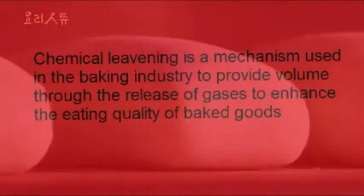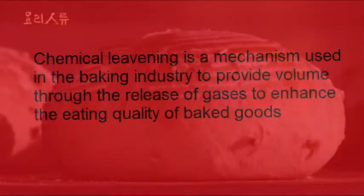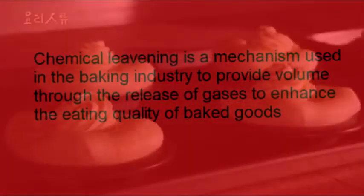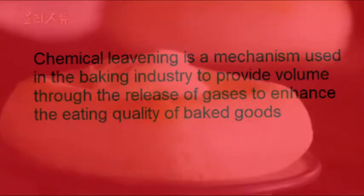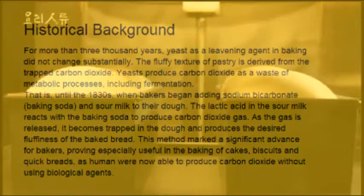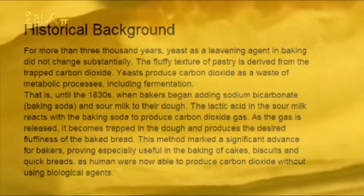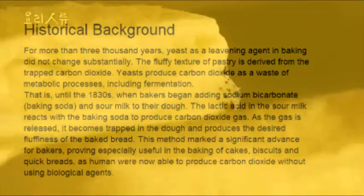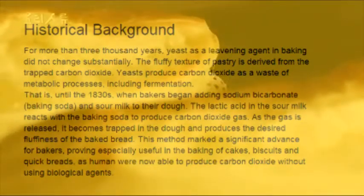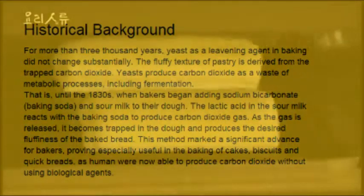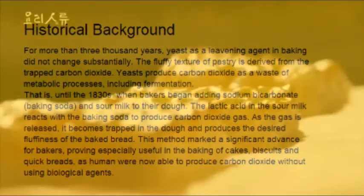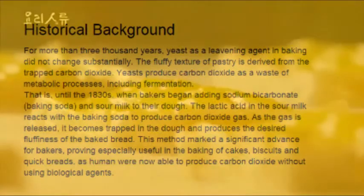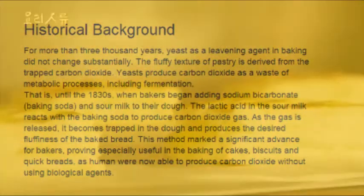Chemical leavening is a mechanism used in the baking industry to provide volume through the release of gases to enhance the eating quality of baked goods. For more than 3,000 years, yeast as a leavening agent in baking did not change substantially. The fluffy texture of the pastry is derived from the trapped carbon dioxide. Yeast produced carbon dioxide as a waste of metabolic processes, including fermentation.